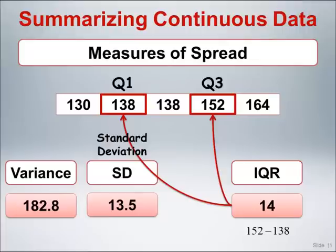As we did with the mean and the median, let's examine the differences in how the variance, standard deviation, and IQR handle outlying values.